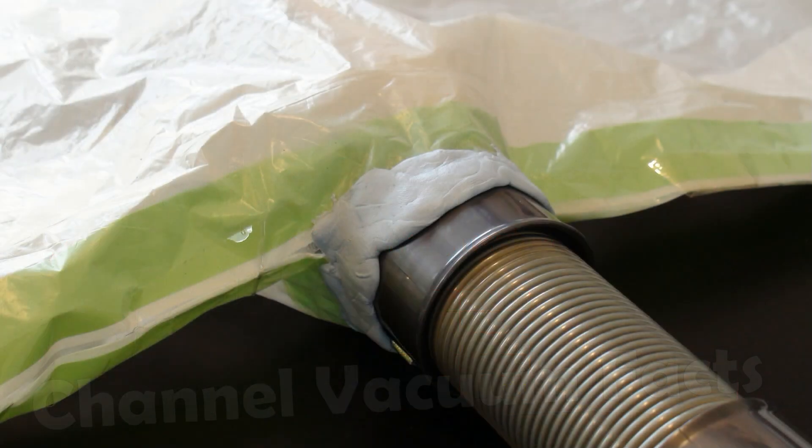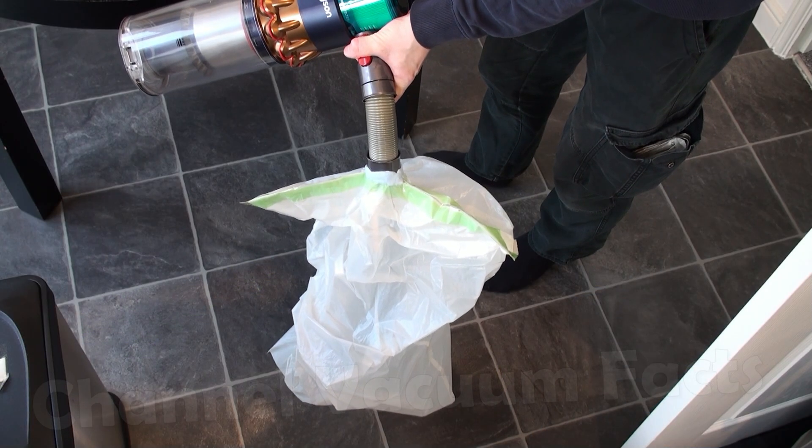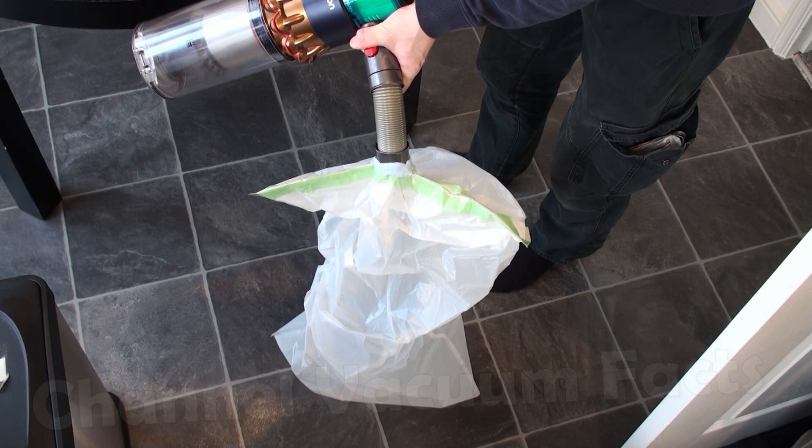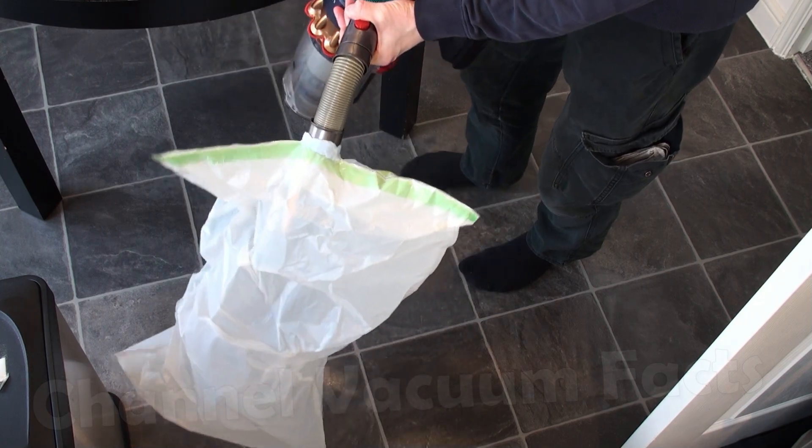Attach it to the cleaner hose and use plasticine, blue tack, putty, or some other malleable material to plug gaps. You can inflate the bag to its maximum volume, with a little help from the exhaust of the machine if you don't fancy blowing it up yourself.